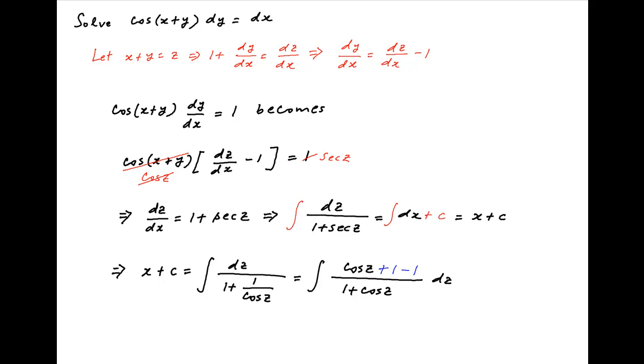Add and subtract 1 in the numerator. And therefore, the right-hand side can be written as integral of 1 minus 1 upon 1 plus cos z dz. Which equals z minus integral of 1 upon 1 plus cos z. And 1 plus cos z can be replaced with 2 cos square z upon 2.